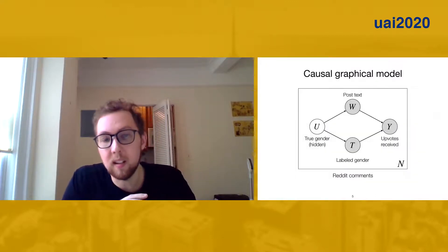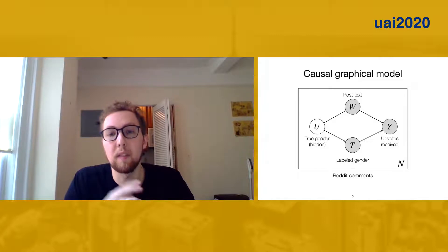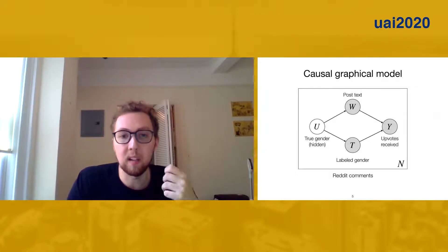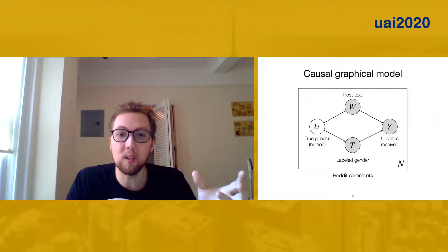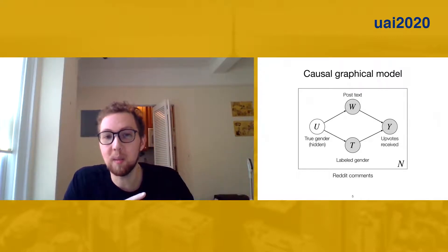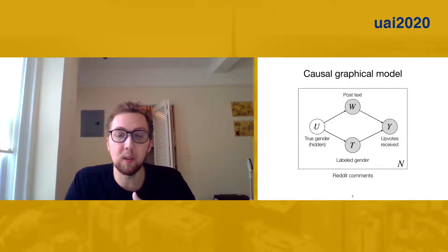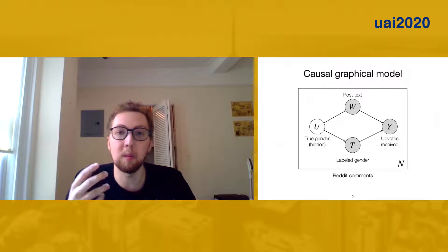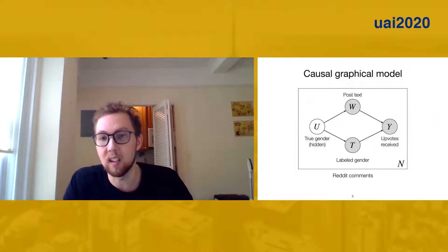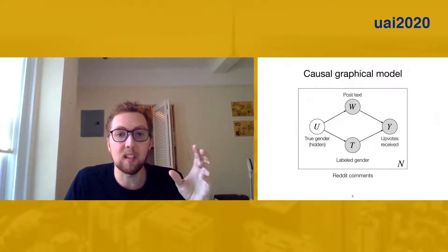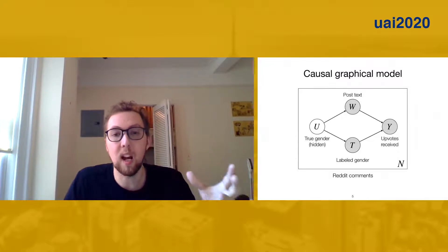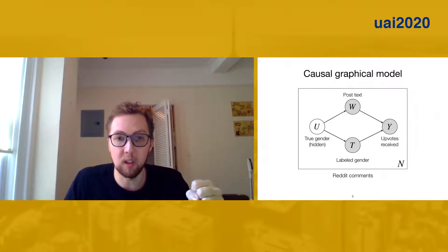The reason it doesn't work is that there could be a common cause of the outcome, the upvotes that the post receives, and the label of the gender. In particular, the true gender of the poster probably pretty strongly influences the label gender of the poster. But the true gender might also influence the kind of things written in the post. So men and women might write about different topics or with different styles. And the text of the post also influences the amount of upvotes that the post receives. This common cause means that the raw association between the outcome and treatment is not going to be the causal effect.